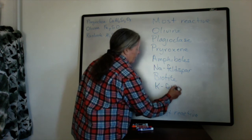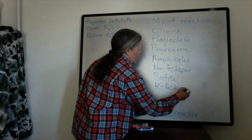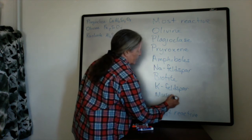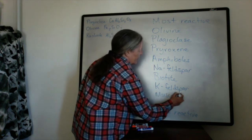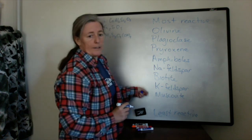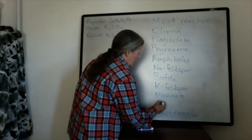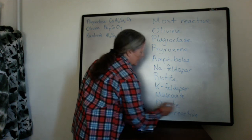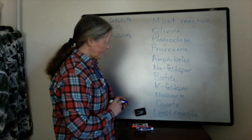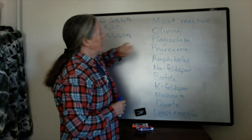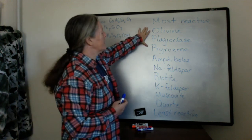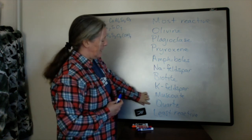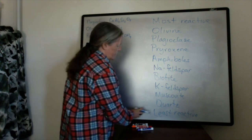Potassium feldspar is next on the list. Muscovite, another mica but without the iron, is a little bit more stable. And then the most stable common mineral against chemical weathering is quartz. So in an environment where you have chemical weathering going on, these minerals are least likely to persist, and quartz is the most likely to persist.